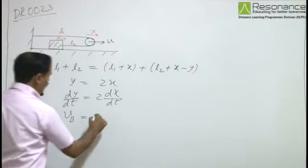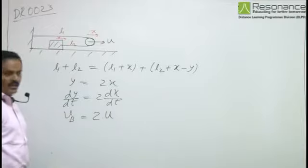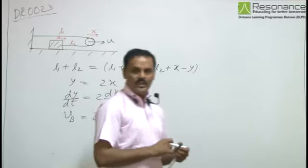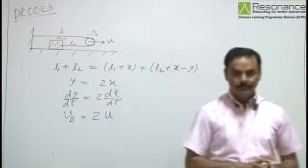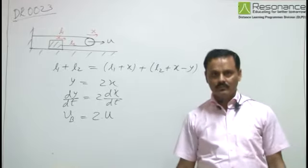Therefore, the velocity of the block is equal to twice the velocity of the pulley, that is 2u. So the block moves rightward with speed 2u.